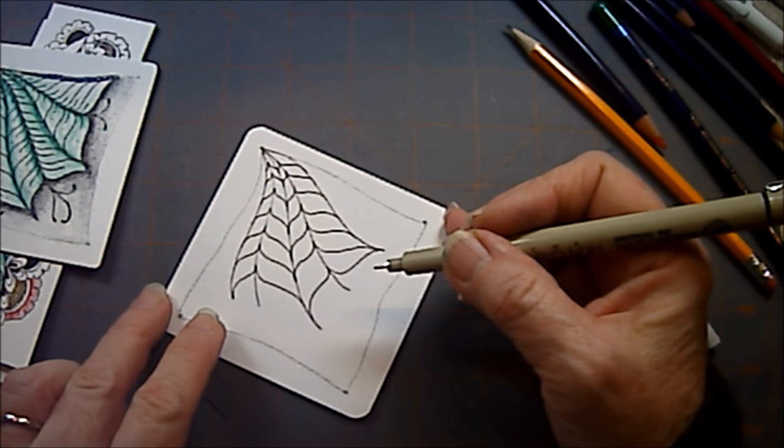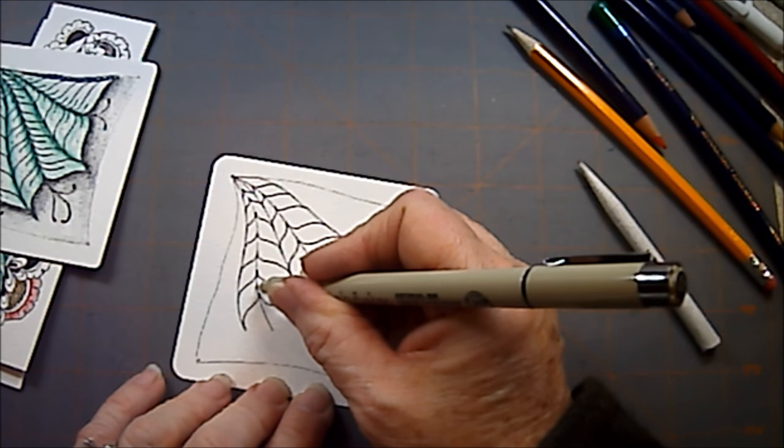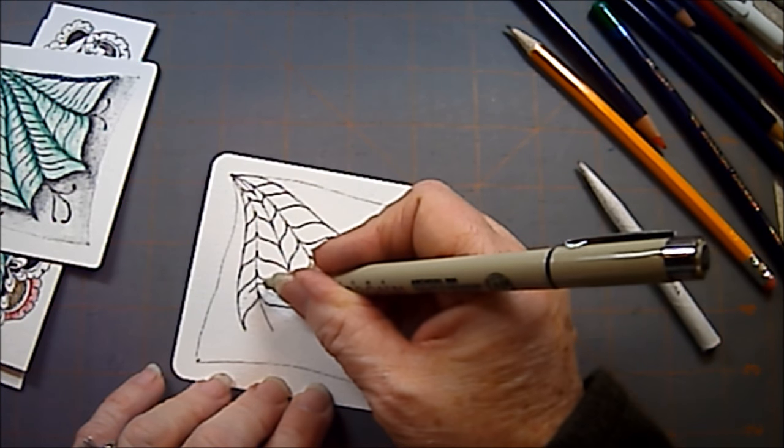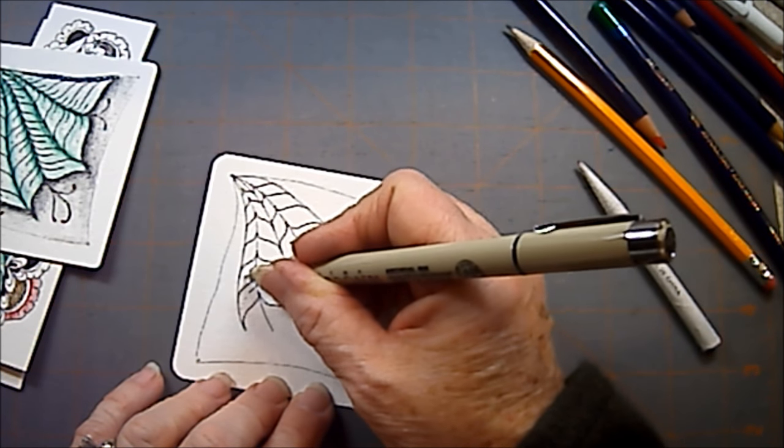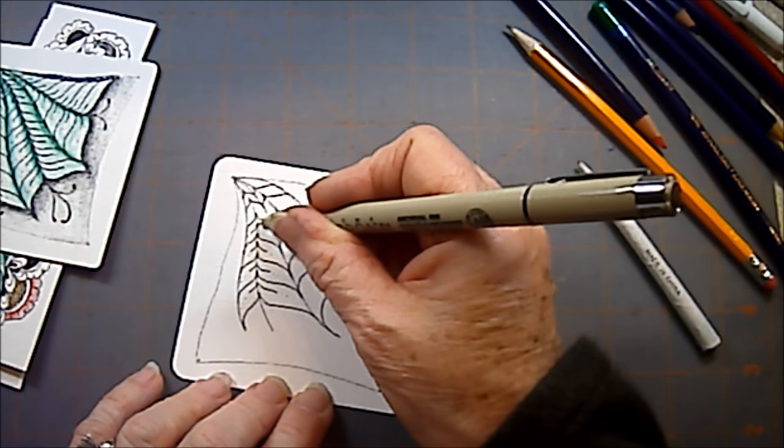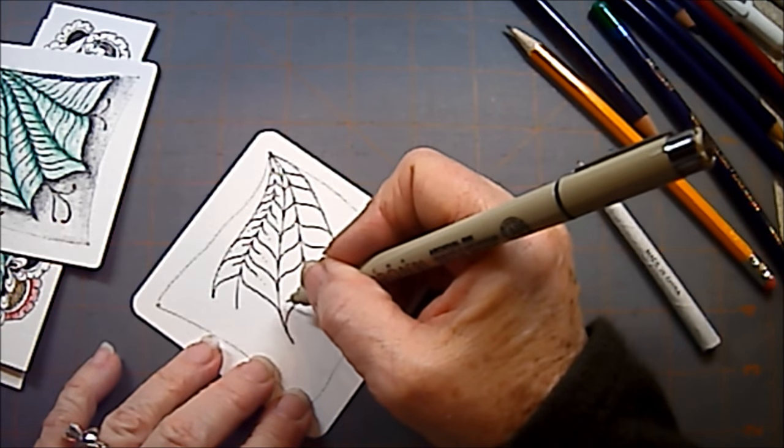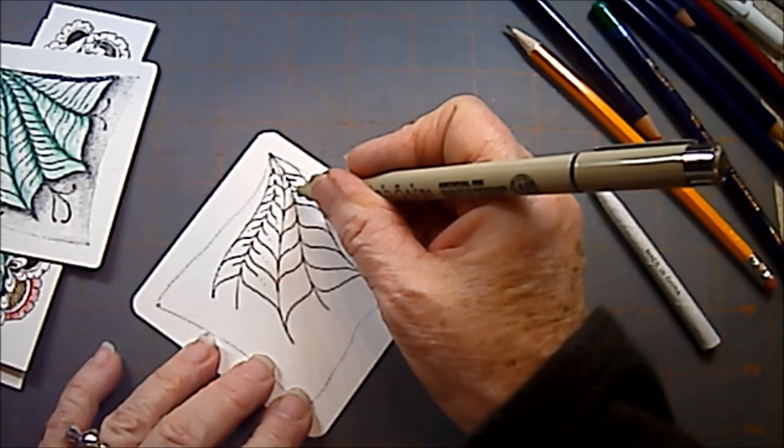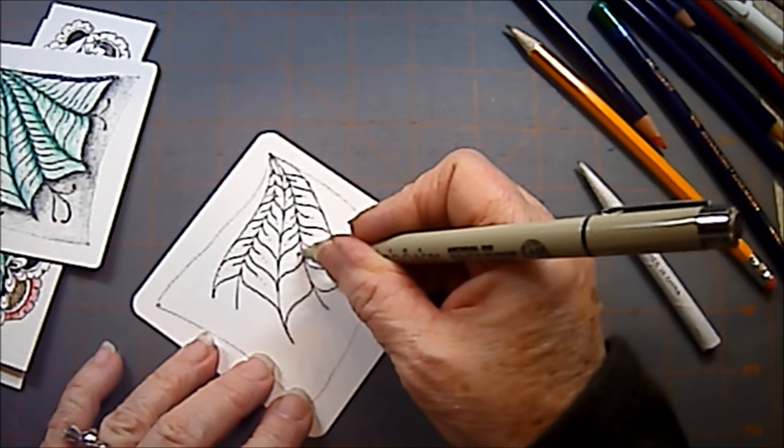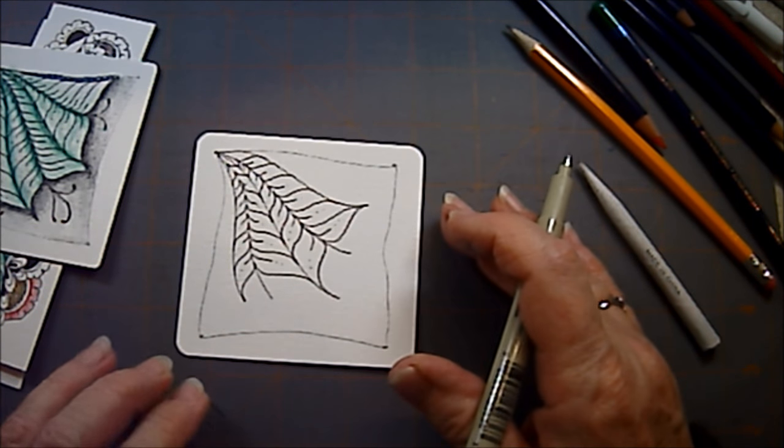And now with finery, we can come in and we can make a little vein line. And we're going to come over here. I'm going to skip this one because I want it just to be coming down. And there we have finery.